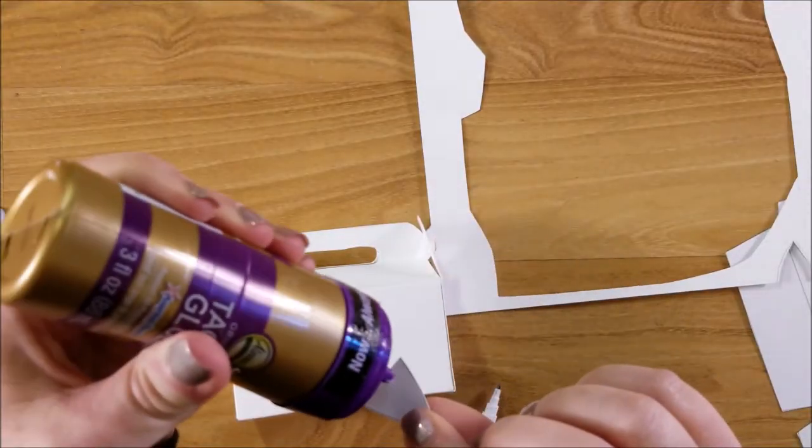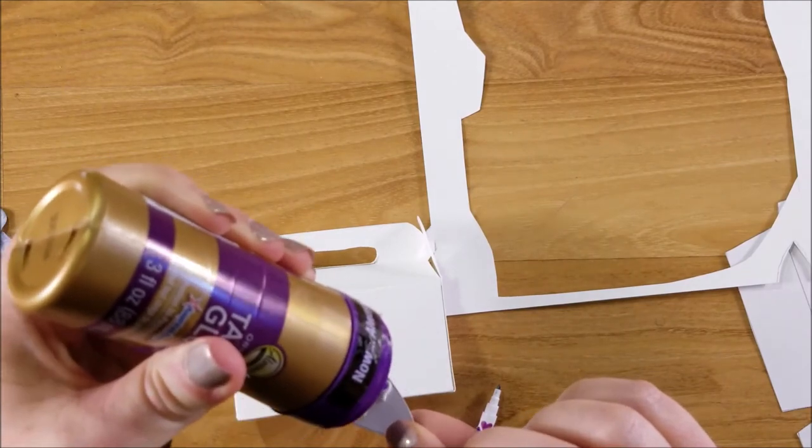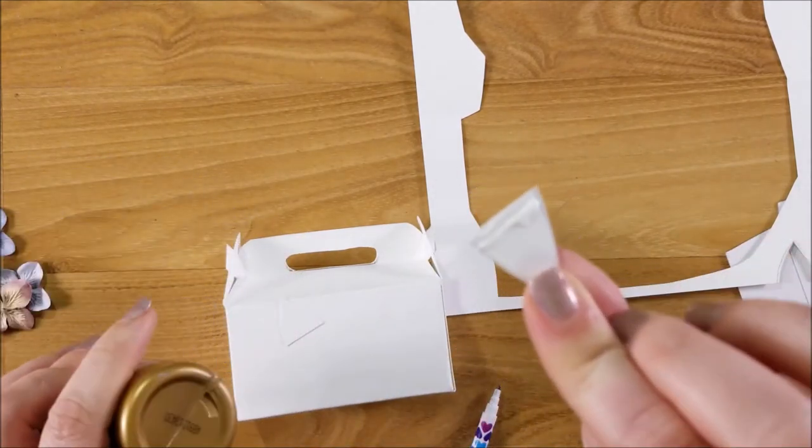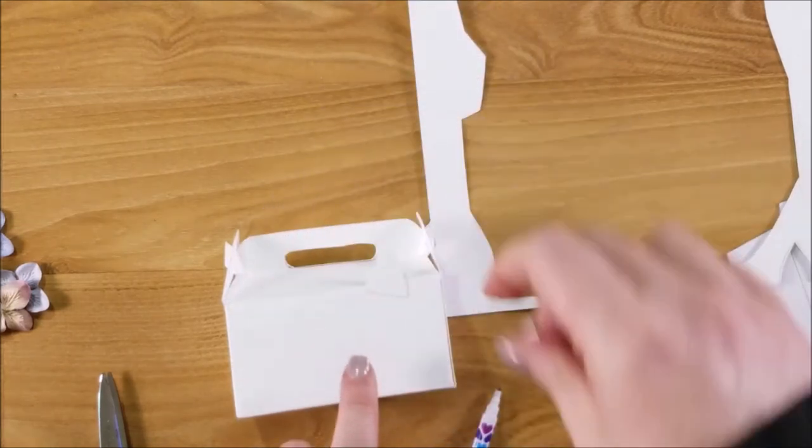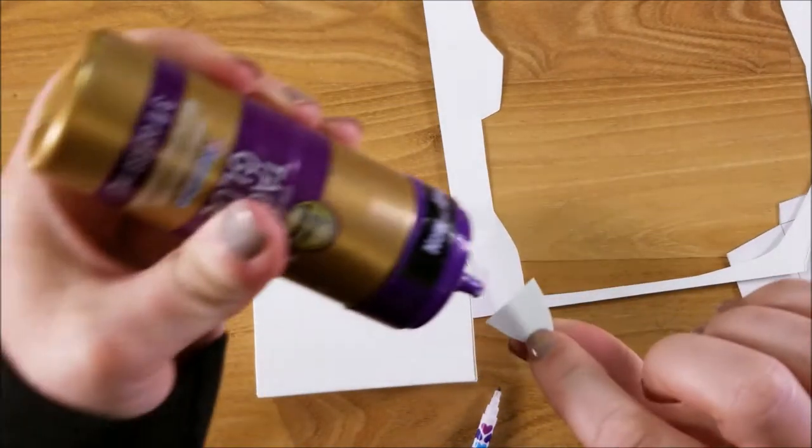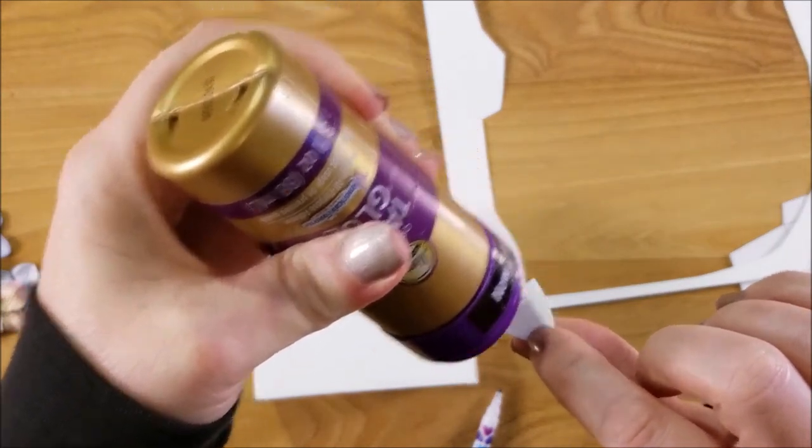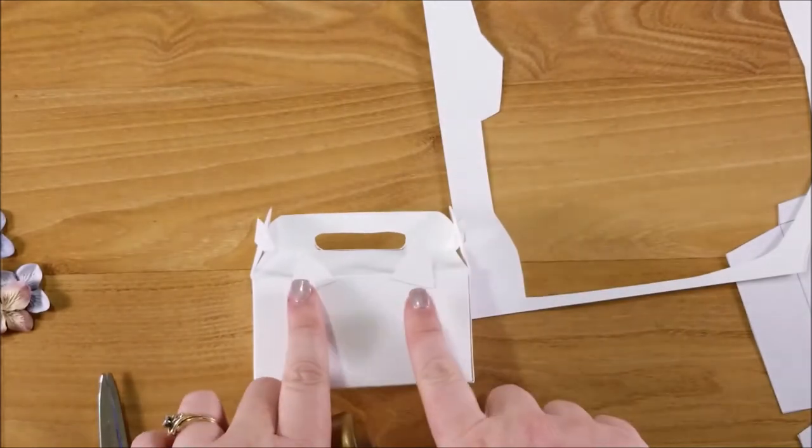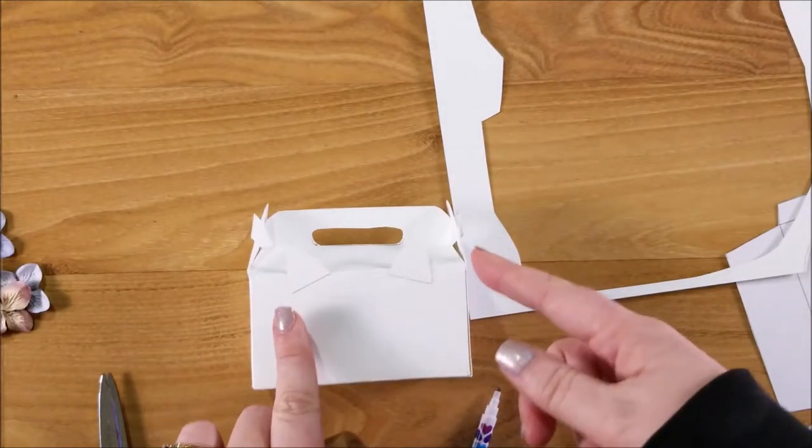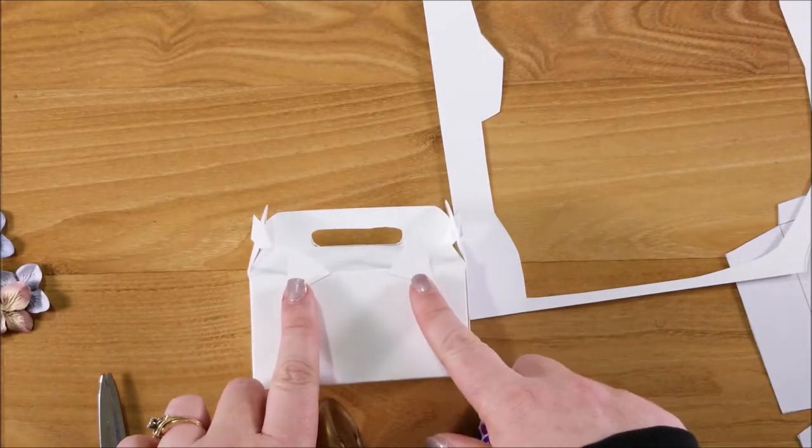You just want to put a little bit of glue on the back towards the bottom of the ear and stick that right on the side near the top edge. And I'd say they're about a half of an inch in from the side of the box.